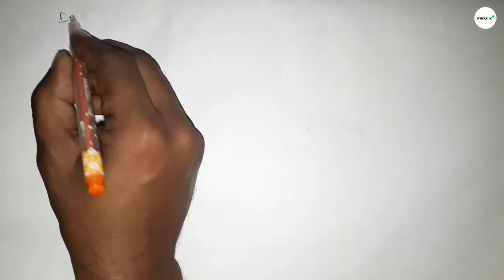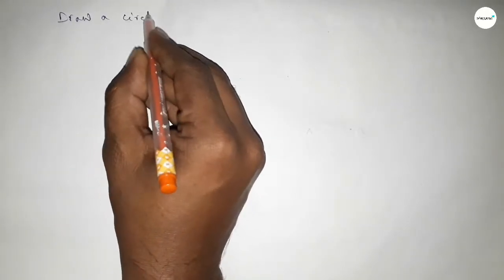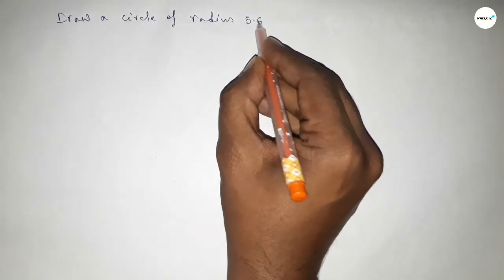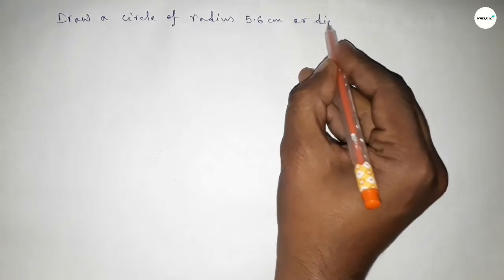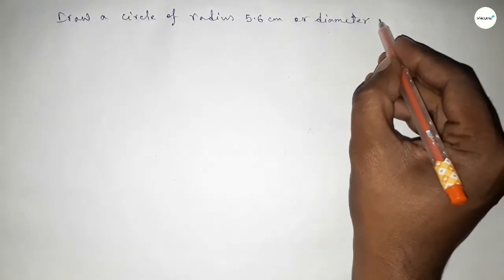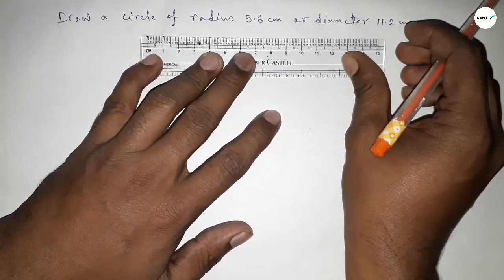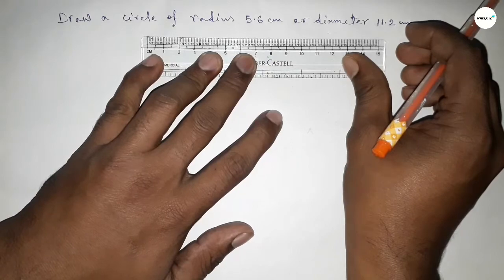Hi everyone, welcome to SI share classes. Today in this video we have to draw a circle of radius 5.6 centimeter or diameter 11.2 centimeter. So let's start the video. First of all, drawing here the radius 5.6 centimeter.